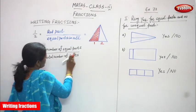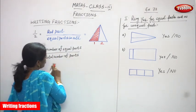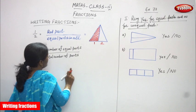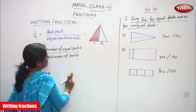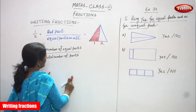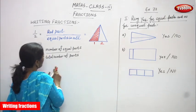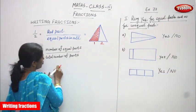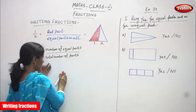How to write the fraction? Number of equal parts and total number of parts — that is what I've given. Number of shaded parts and the total number of parts.